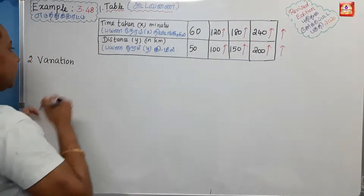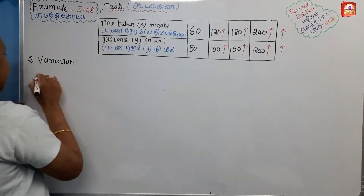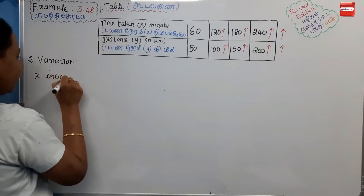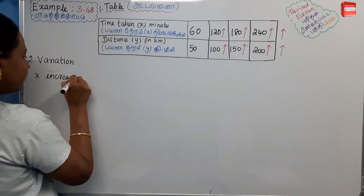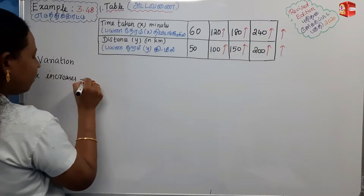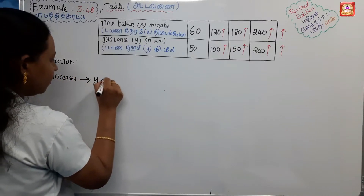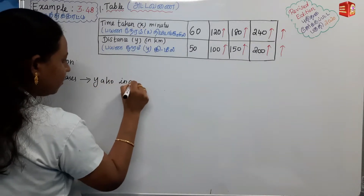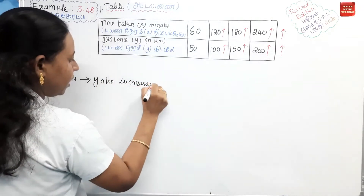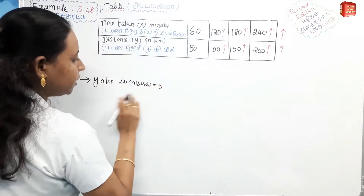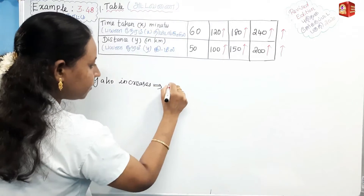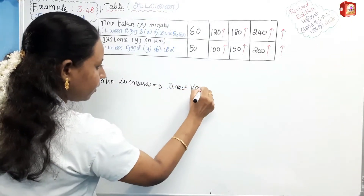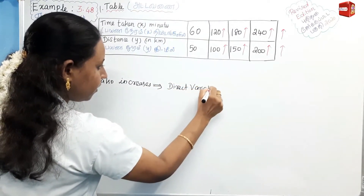Variations are increasing — X increases and Y also increases. So what is the direct variation? This is a direct variation.